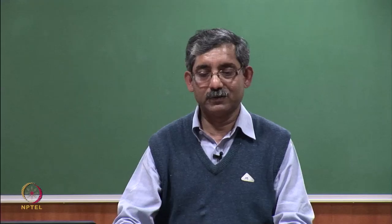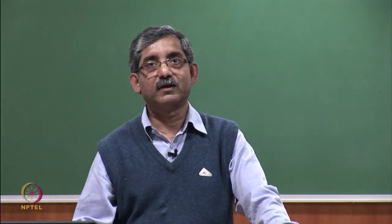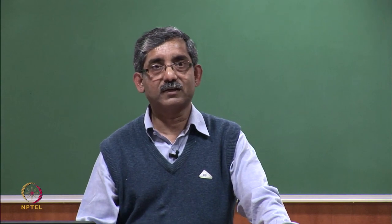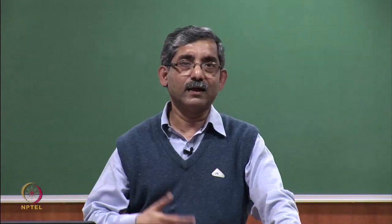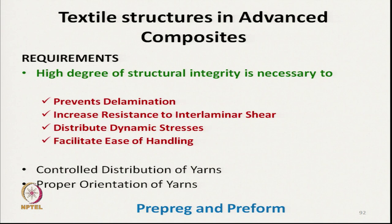The basic requirement of textile structures for advanced composite materials is that it requires a high degree of structural integrity. This is required to prevent delamination, to increase resistance to interlaminar shear, distribution of dynamic stress, and to facilitate ease of handling. If we cannot handle the preform easily, that will be a problem.